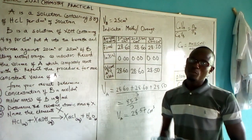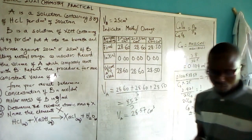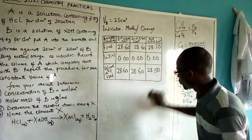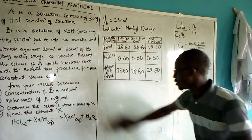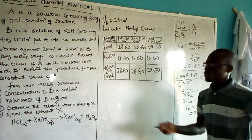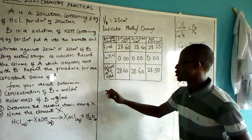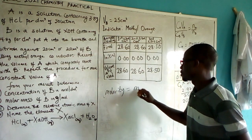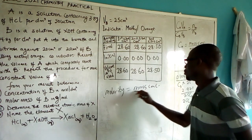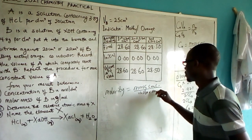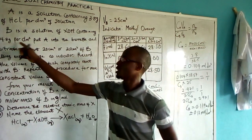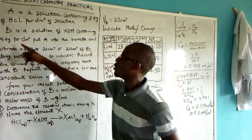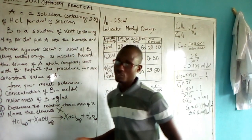We can also find the molar mass of B. Using: molarity = mass concentration ÷ molar mass, and the question states solution B contains 4.8 grams per dm³, so: 0.12 = 4.8 ÷ molar mass.